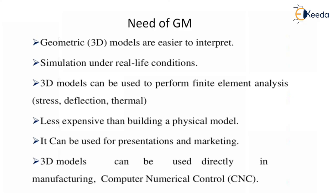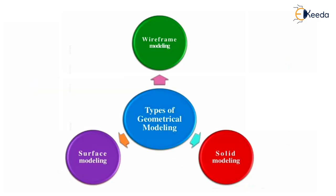3D models can be used directly in manufacturing via CNC — computer numerical control — machines, from which we can do any type of machining such as lathe machining, vertical milling centers (VMCs), and other computer-aided manufacturing, which we will study in further units. The types of geometric modeling are wireframe modeling, surface modeling, and solid modeling — these three types we will study in detail in the next session. Thank you so much, hope you understood well.